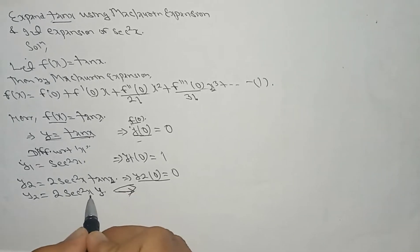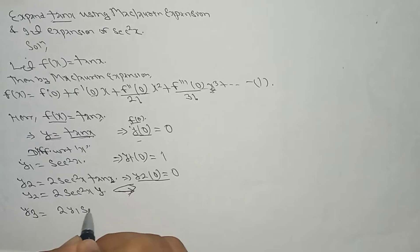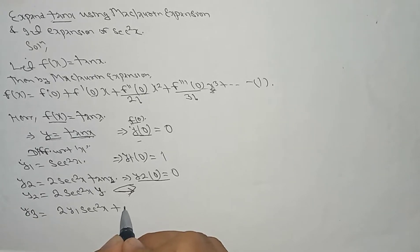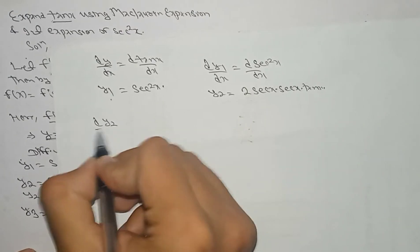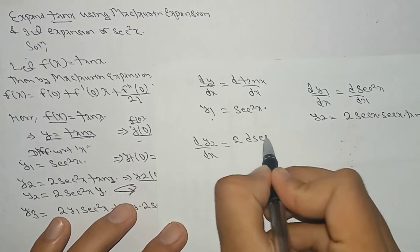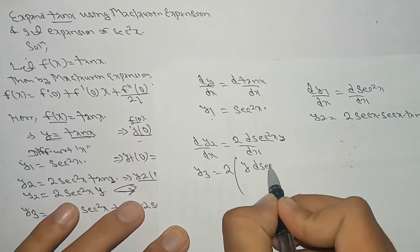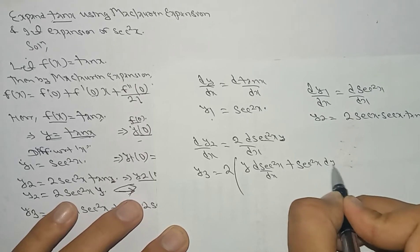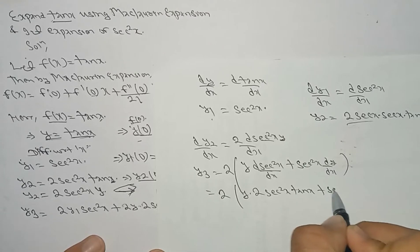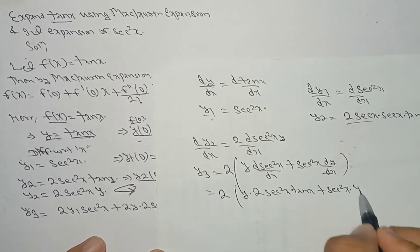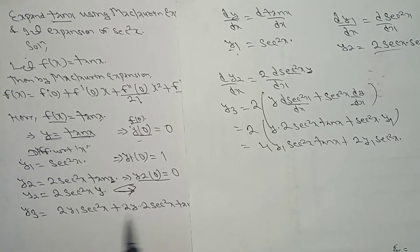Now we find y3. We have y2 = 2·sec²x·y, and we need to go up to the y3 term. Differentiating: dy2/dx = 2·d(sec²x·y)/dx. Using the product rule: y3 = 2·[y·(d sec²x/dx) + sec²x·(dy/dx)] = 2·[y·2·sec²x·tan(x) + sec²x·y1] = 4y·sec²x·tan(x) + 2y1·sec²x.